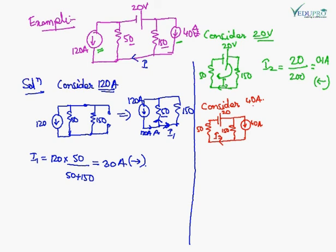Now consider the 40 Ampere source. The voltage source will be replaced by a short circuit, so there is no voltage source. The circuit has 40 Ampere current getting divided into two paths. I3 is given by 40 into 150 upon (150 plus 50), which equals 200. So I3 is 30 Ampere, and the direction of current will be as shown.